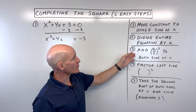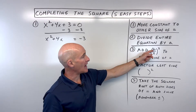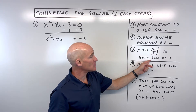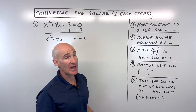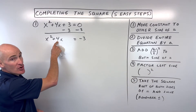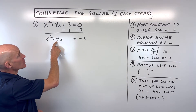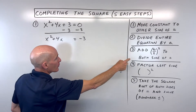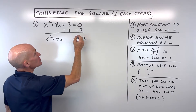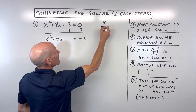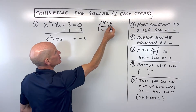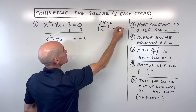Number 3, we're going to complete the square by adding b divided by 2, squared, to both sides of the equation. Remember, b is the number that comes in front of the x term. So we're going to take half of 4, or 4 divided by 2, and square it. 4 divided by 2 is 2, and 2 squared is equal to 4.